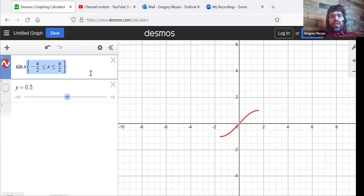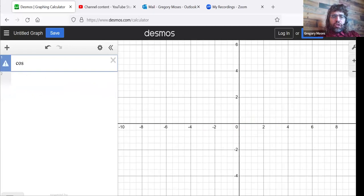For the sine, we looked at the chunk between negative pi over two and positive pi over two. Sadly, the restriction is going to be different for each trig function.